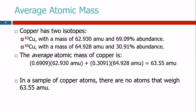So let's think about copper, because it only has two isotopes. Copper has two isotopes. There's copper-63 and copper-65. So copper-63 has an atomic mass of 62.930 atomic mass units.